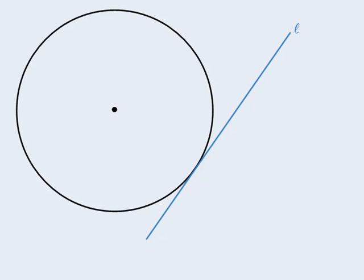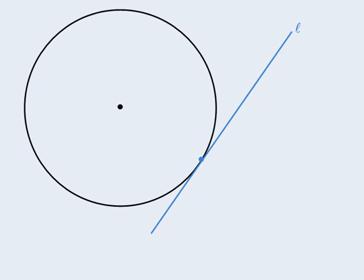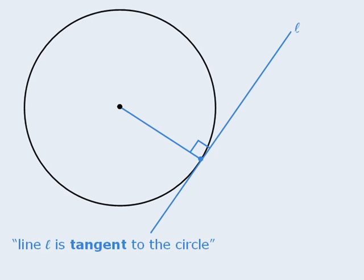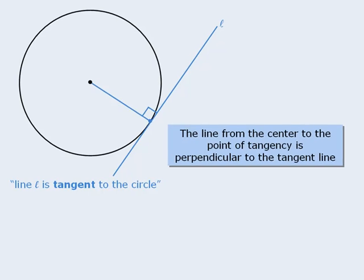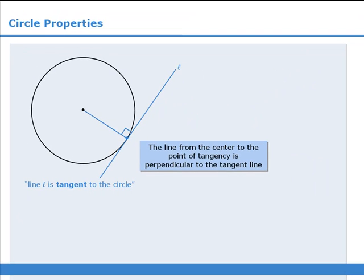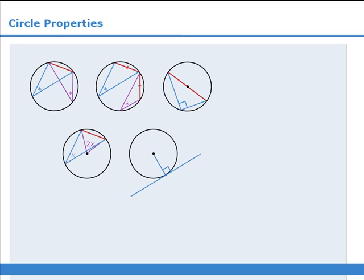Here's one last property. It begins with a definition. If we have a line that touches a circle at only one point, then we say that that line is tangent to the circle. Now, if we draw a line from the center of the circle to the point of tangency, then this line will be perpendicular to the tangent line. OK, that wraps up circle properties. In this lesson, we learned five circle properties that you need to know.